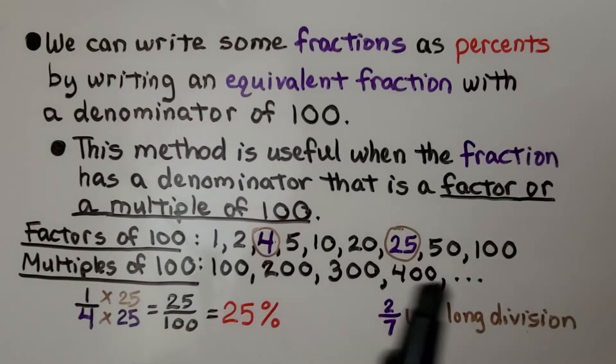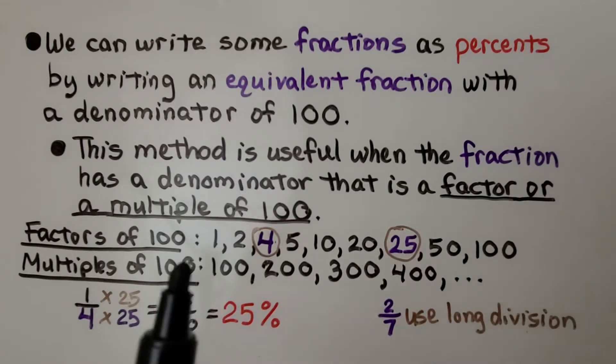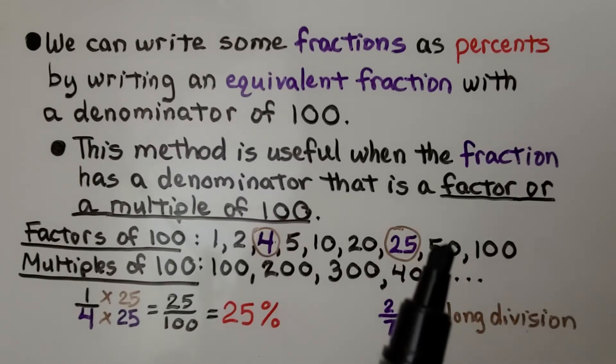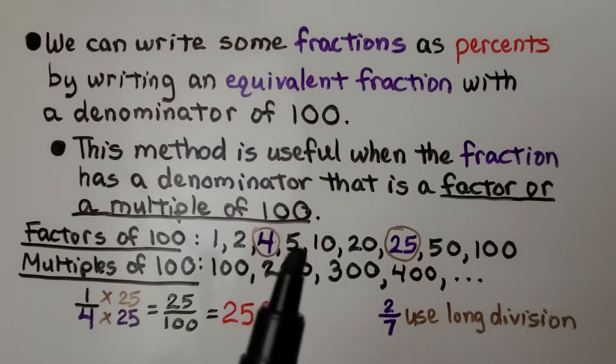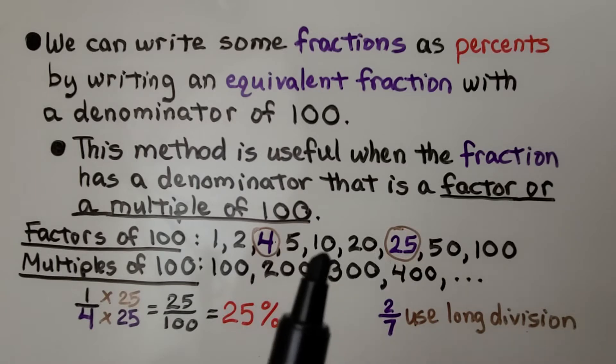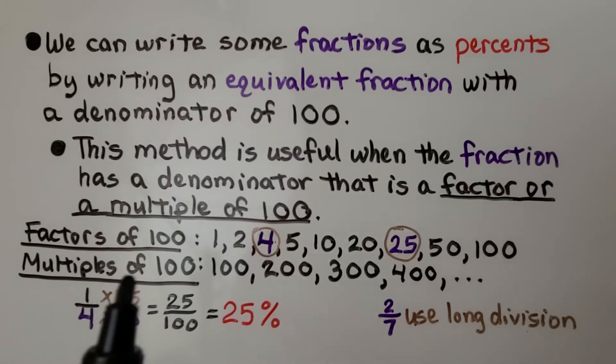The factors of 100 are 1 times 100, 2 times 50, 4 times 25, 5 times 20, or 10 times 10. And the multiples of 100 are 100, 200, 300, 400, and so on, 500, 600, 700.